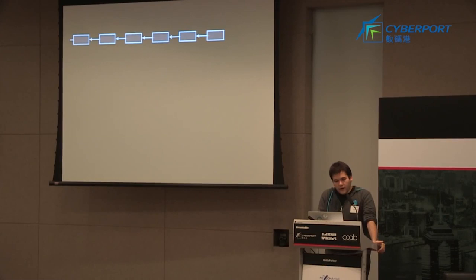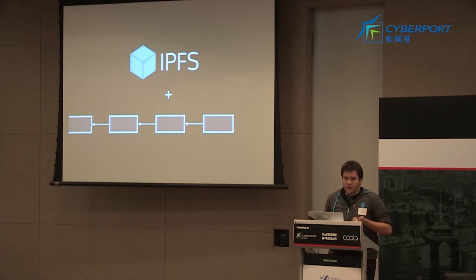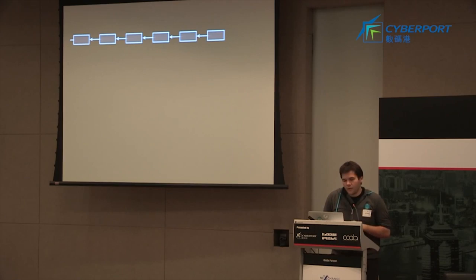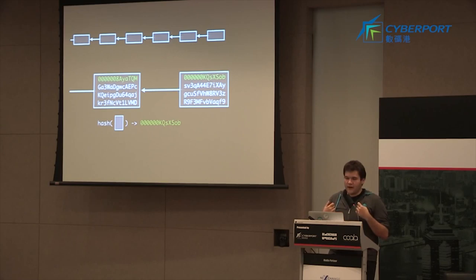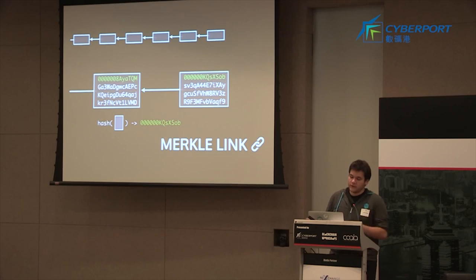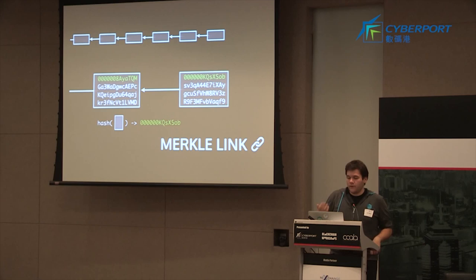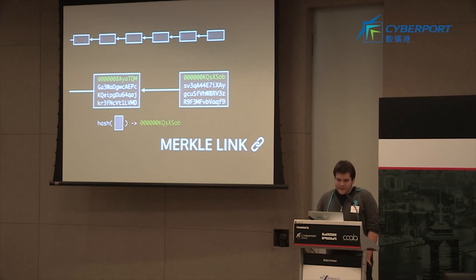IPFS loves blockchains because a blockchain is just a Merkle-linked data structure like any other, which means you can put them entirely on IPFS and use it as a transport. When you think about a blockchain, you have a block with some data, and another block pointing to the previous one. The key part is that the link is a hash — when you hash the block on the left, you get the value included in the block on the right. That's a Merkle link. You get the ability to check integrity of the entire chain through that property.